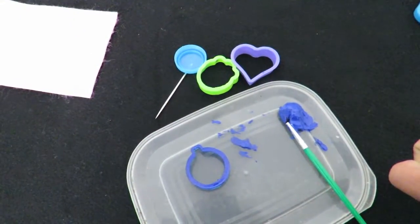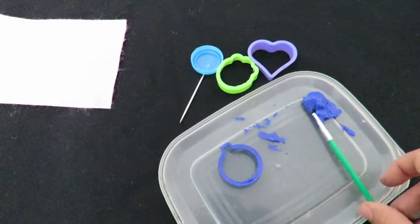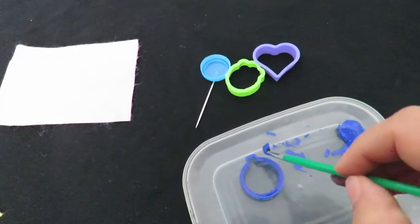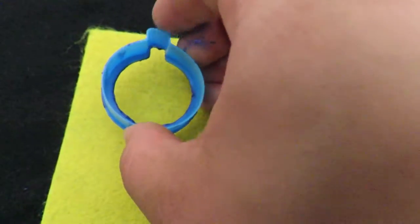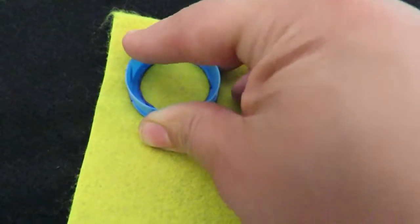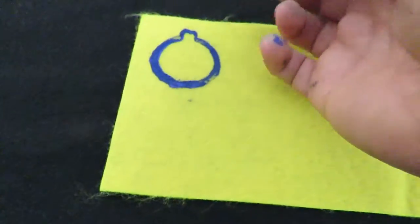You can use anything as a palette, so I've used the lid of a container. I'm using some of the printing ink and I'm putting it on my brush and just putting it around the cutter. Then I'll take my cutter and just place it onto the surface, press it a bit, and then you just want to remove it very carefully.